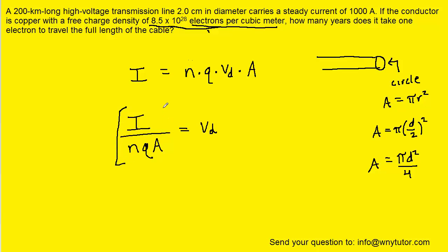The reason we want to isolate this expression for drift speed is because the time required for an electron to travel the full length of the cable would be the distance it travels divided by the drift speed. The distance is L, the length of this high voltage transmission line, divided by the drift speed. We have this expression for drift speed, so we'll substitute that in for the denominator of our time equation.